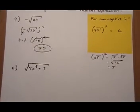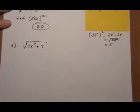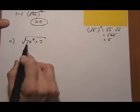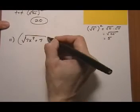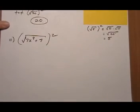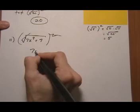Then on the next one, number 11, we have root 7x to the ninth plus seventh, and we want to square it. Well, the root and the square cancel each other out, and we get the insides.